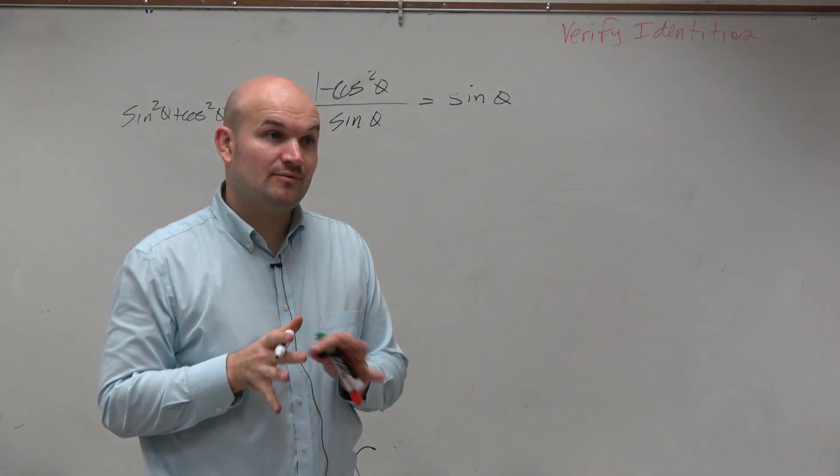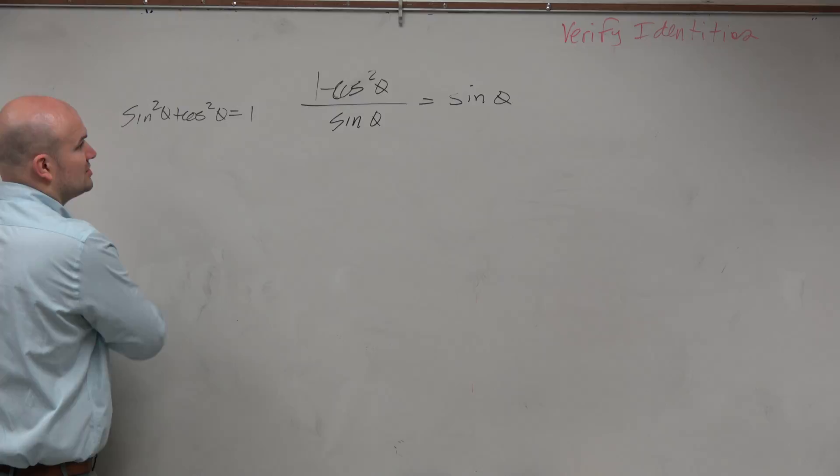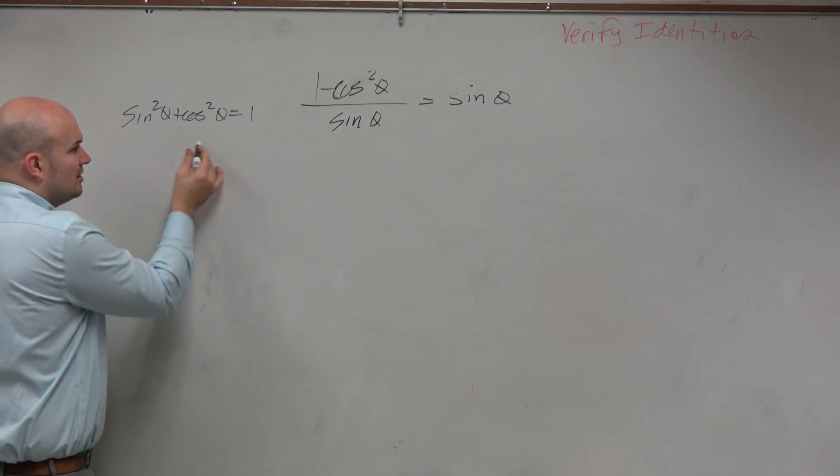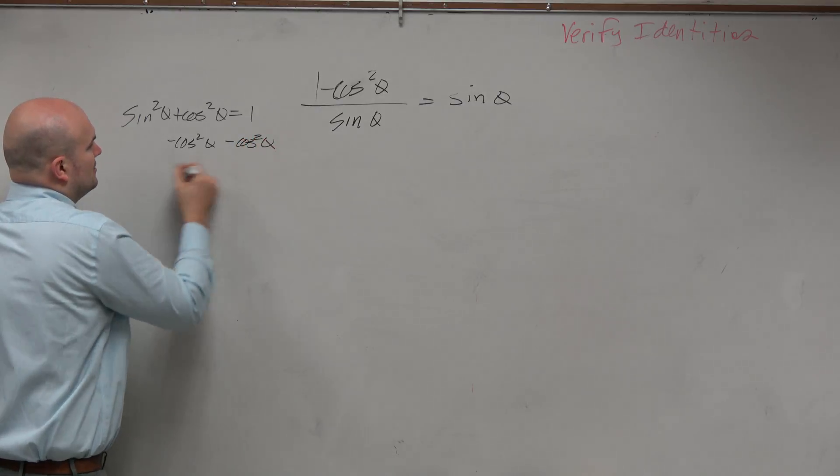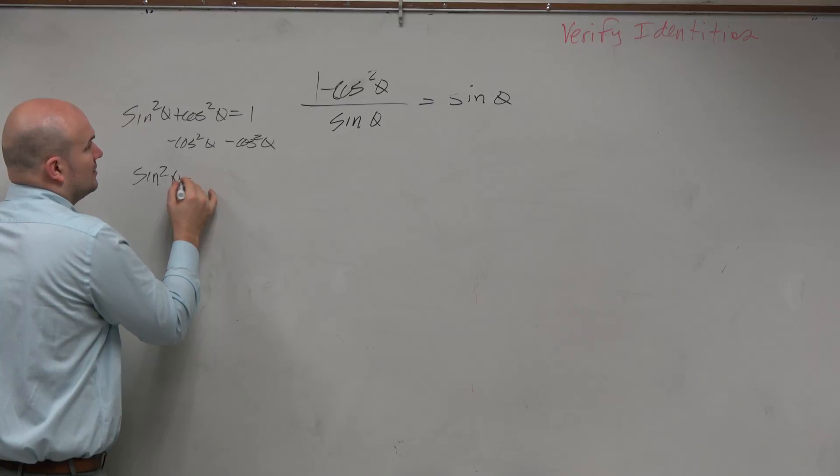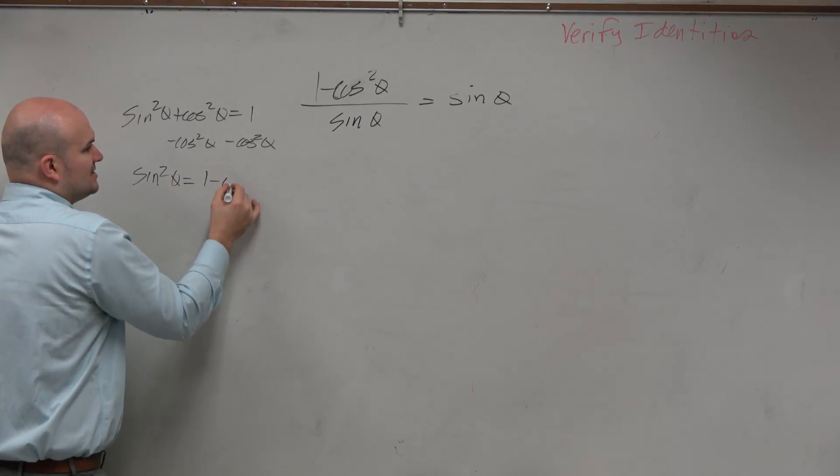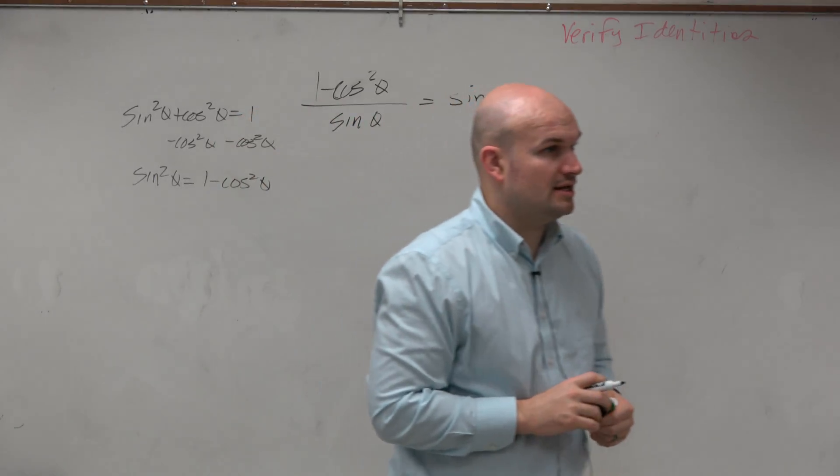Now, we want to see, can we manipulate this where it's 1 minus cosine of theta? Well, sure. If I just subtract cosine squared of theta on both sides, I get sine squared of theta equals 1 minus cosine squared of theta. Do you guys see that? Agree with me?